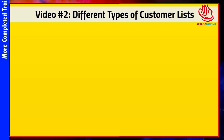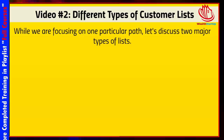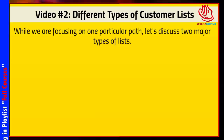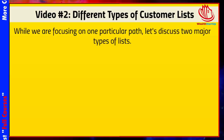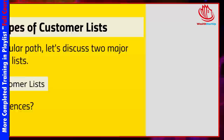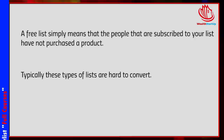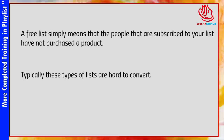Welcome back. This is video number two, and we're going to talk about the two different types of customer lists. While we're focusing on just one particular path, I really want to talk about both major types so you understand why we're focusing on just one. The two major ones are the free list versus the customer list. A free list simply means that people subscribed to your list have not purchased a product — they land on a squeeze page, enter their name and email, and that's it. They're not buying anything.